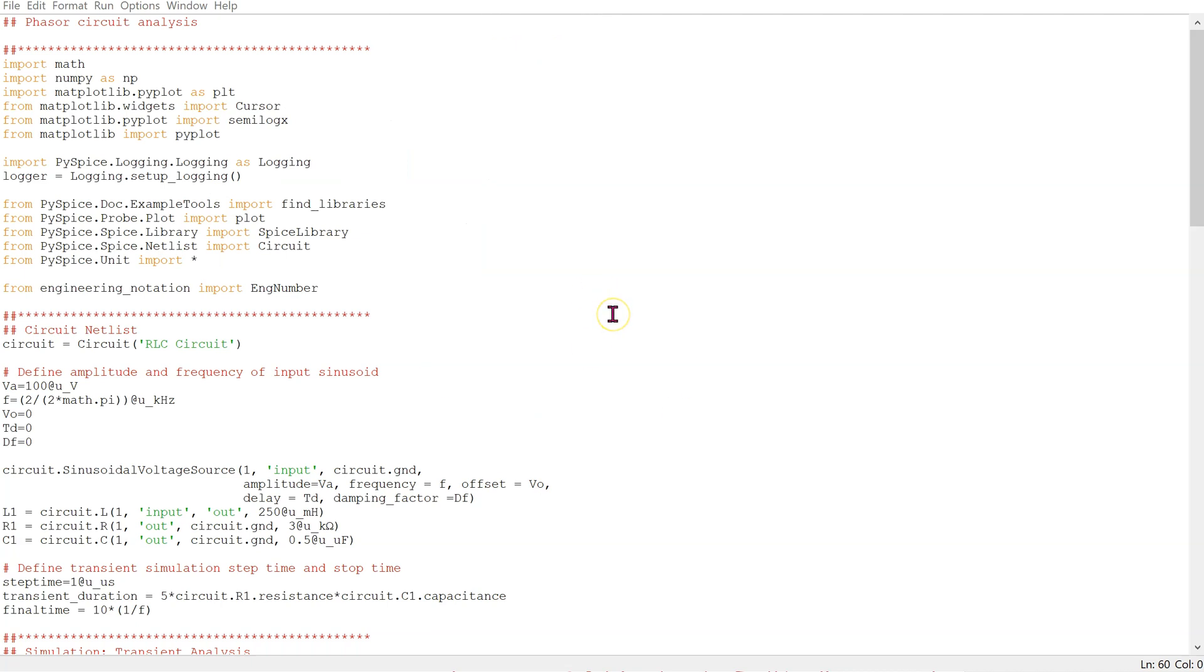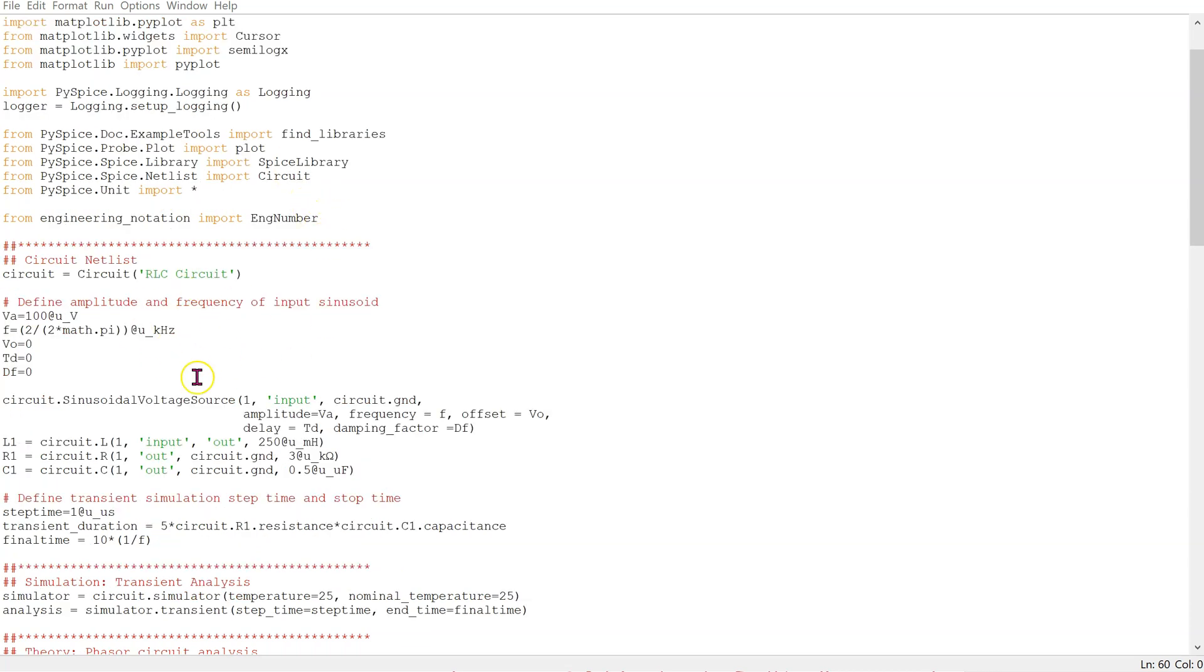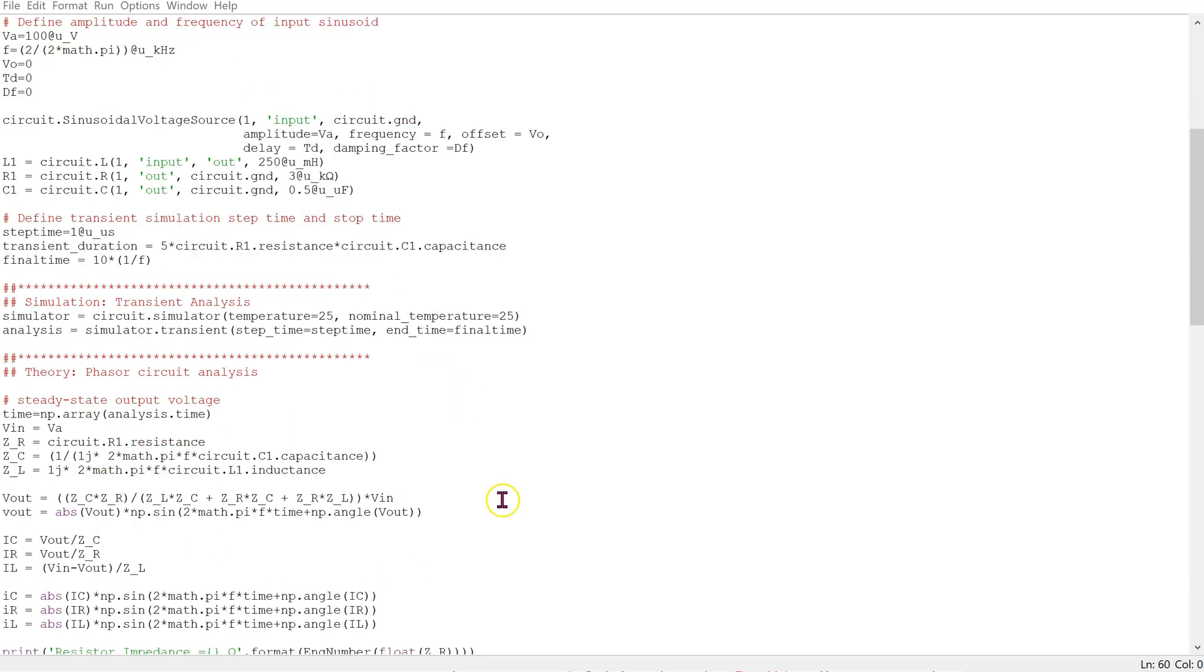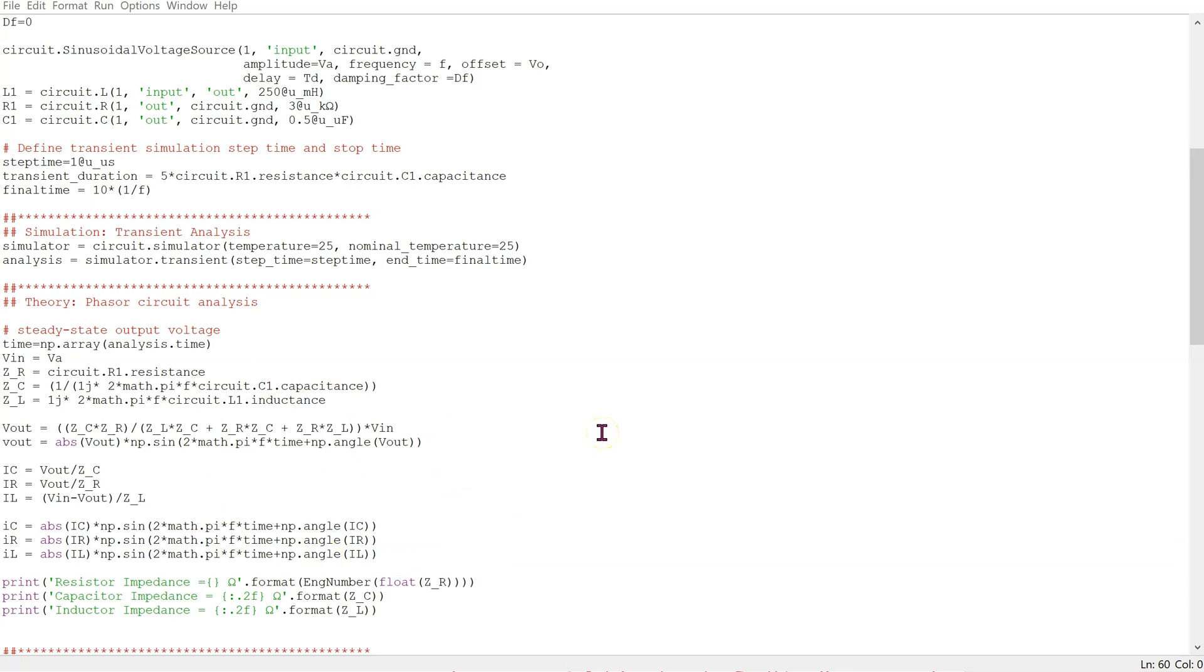This is the Python code to simulate the RLC circuit. We have the standard declarations at the top, the circuit netlist part, and the transient simulation. We program the theoretical phasor circuit analysis.